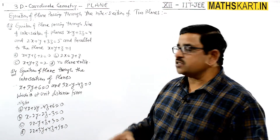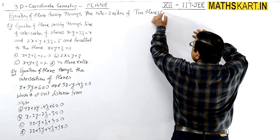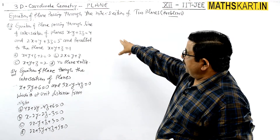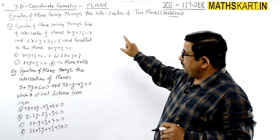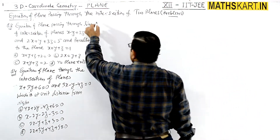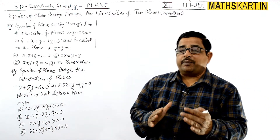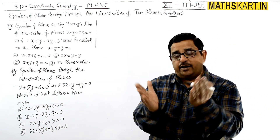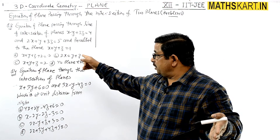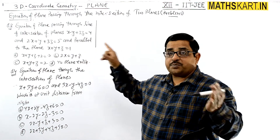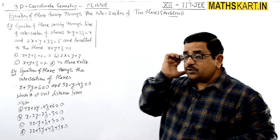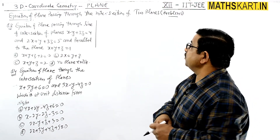We need to find the equation of the plane passing through the intersection of two planes and parallel to a given plane. We require the plane which passes through the line of intersection of two planes and is parallel to the given plane x plus y plus z equals 1. Since it's parallel, the direction ratios are in a ratio, and we will use that to find the value of lambda.